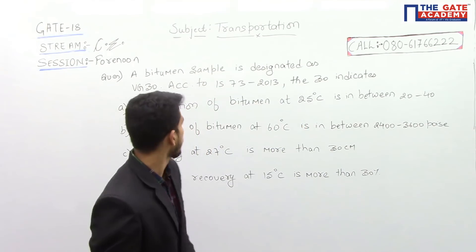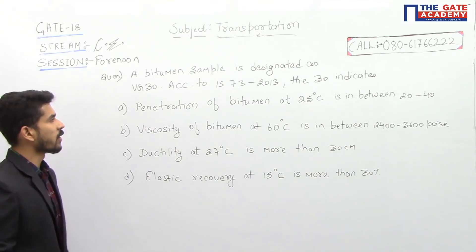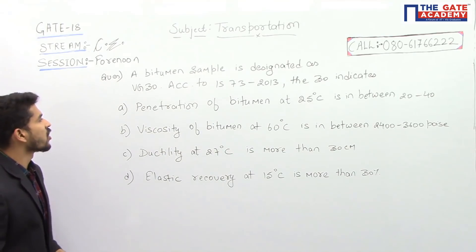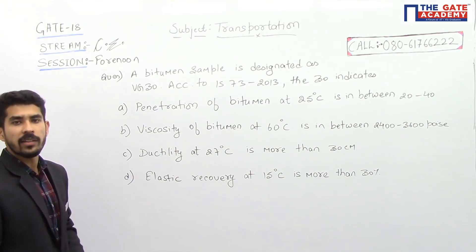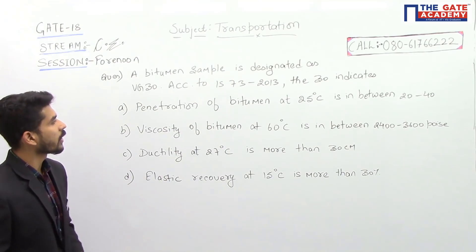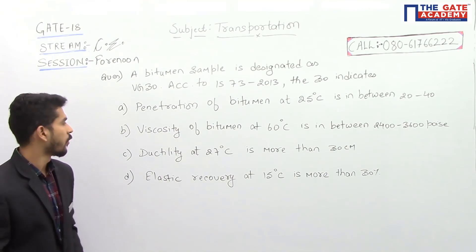The question says a bitumen sample is designated as VG30. According to IS73:2013, the 30 indicates, and we have four options.